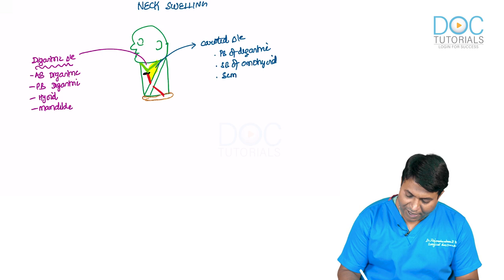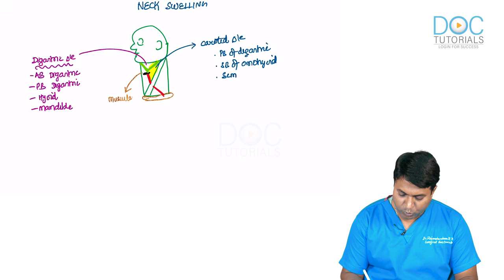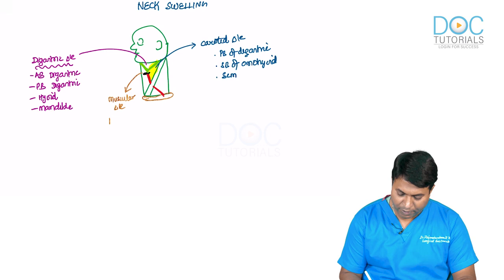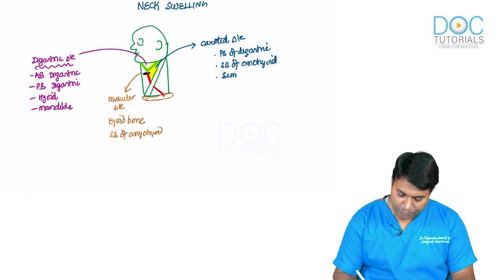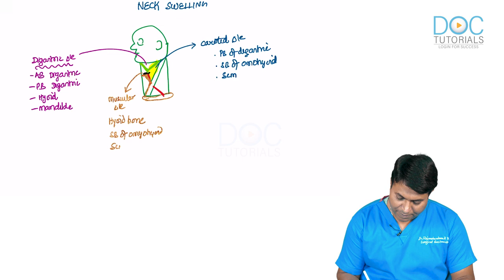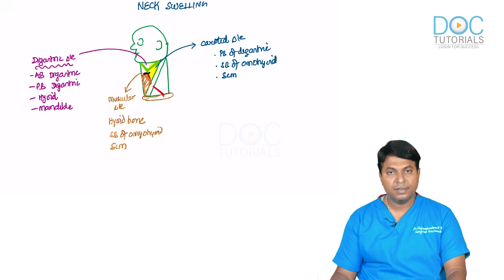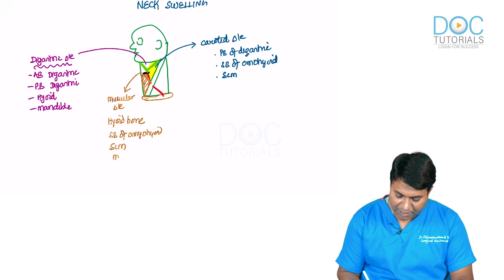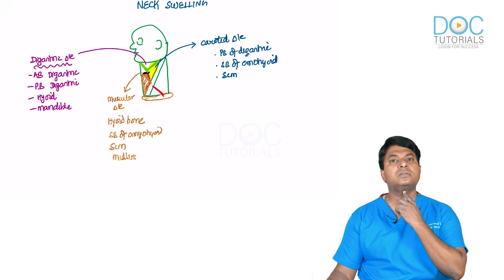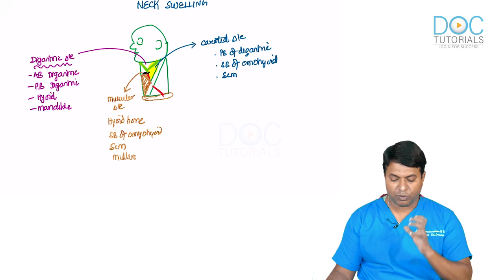There is also a triangle formed in front known as the muscular triangle, bounded by the hyoid bone, superior belly of omohyoid, sternocleidomastoid muscle, and the midline. This forms the muscular triangle.